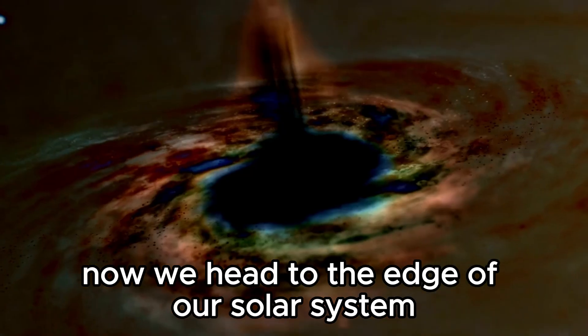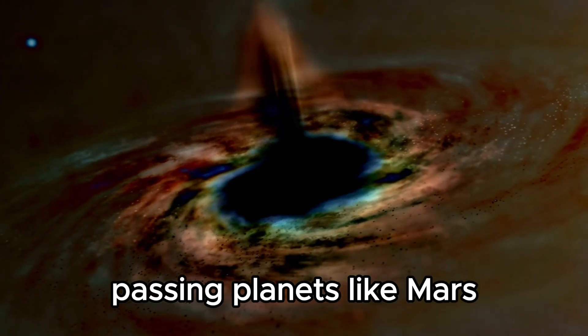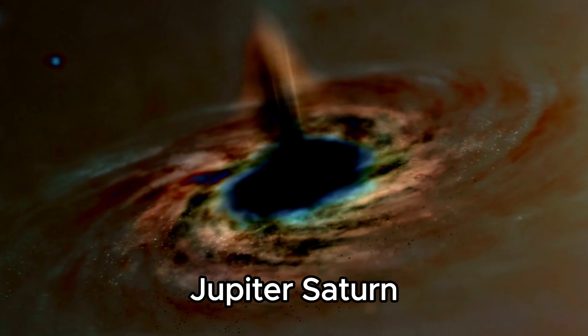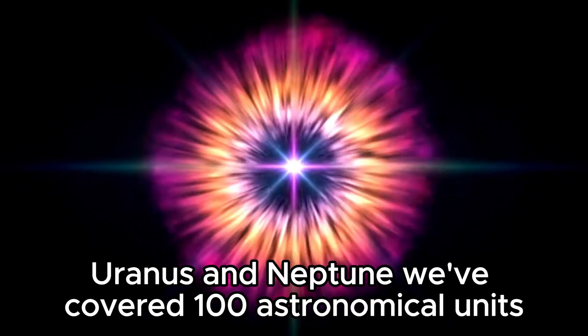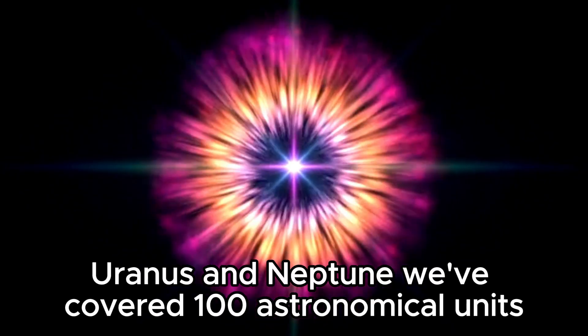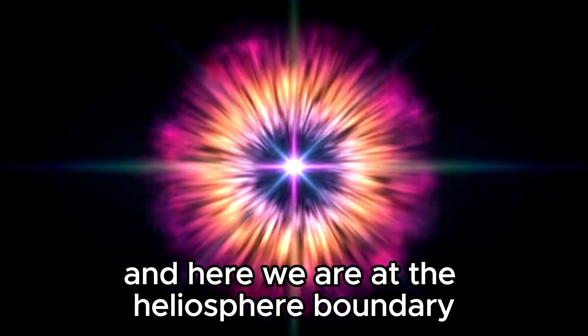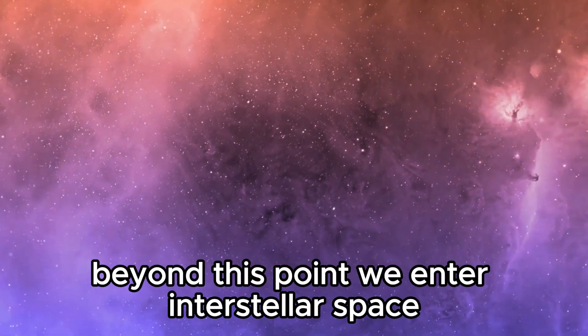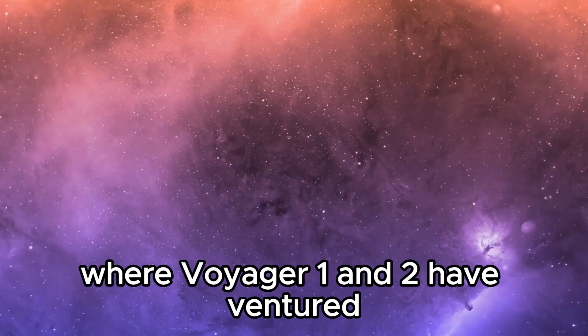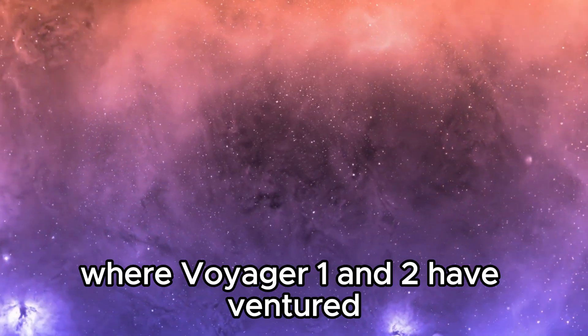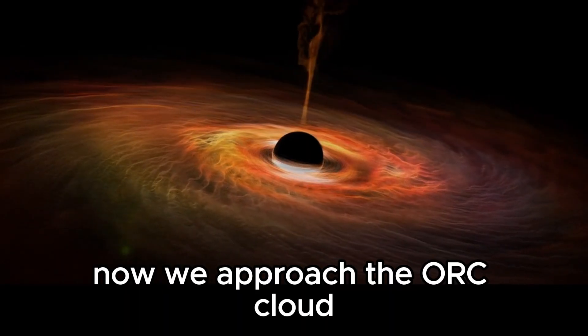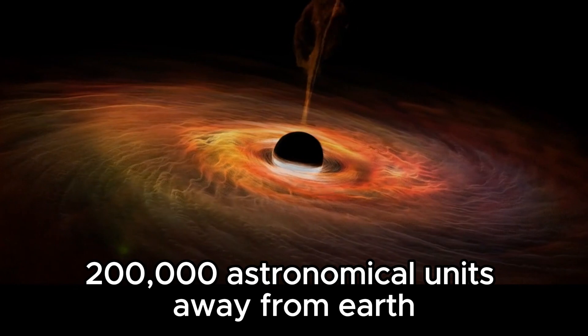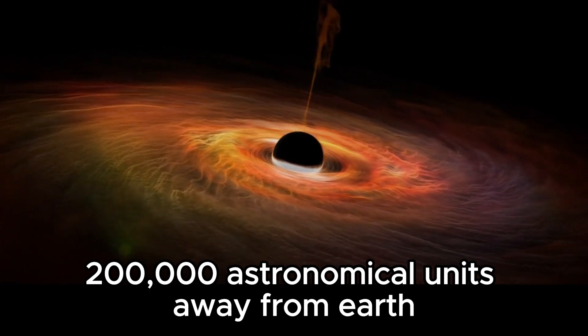We head to the edge of our solar system, passing planets like Mars, Jupiter, Saturn, Uranus, and Neptune. We've covered 100 astronomical units, and here we are at the heliosphere boundary. Beyond this point, we enter interstellar space, where Voyager 1 and 2 have ventured. Now we approach the Oort Cloud, a wall of asteroids 200,000 astronomical units away from Earth.